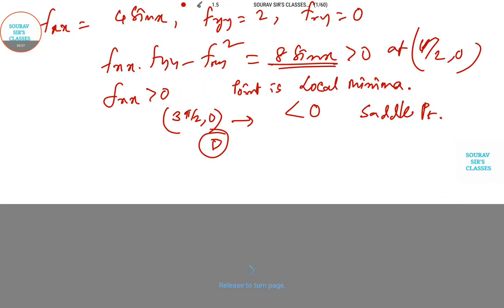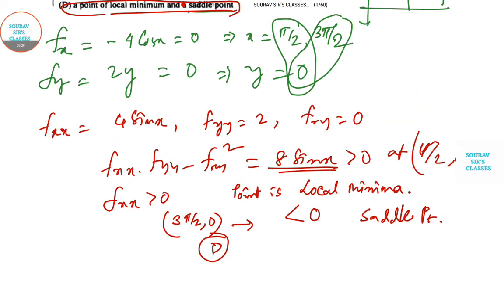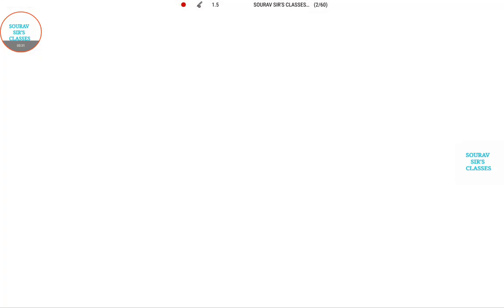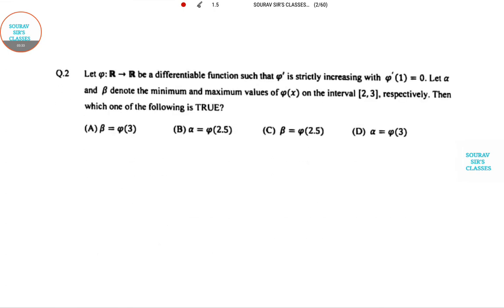Let's go to the next question. This question is about a differentiable function φ that is strictly increasing with φ'(1) = 0. Let α and β denote the minimum and maximum values on the interval [2,3] respectively.